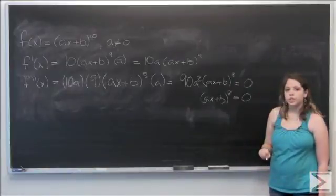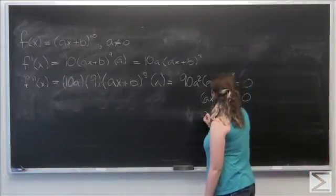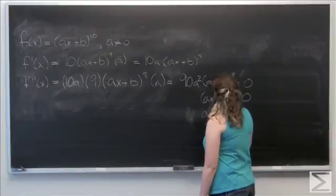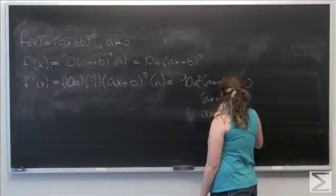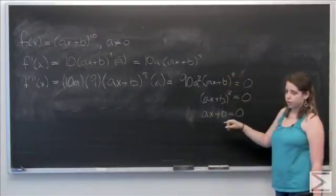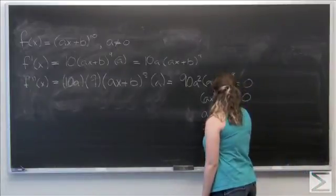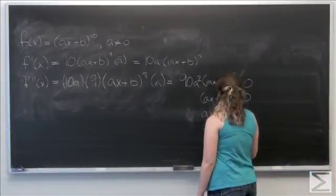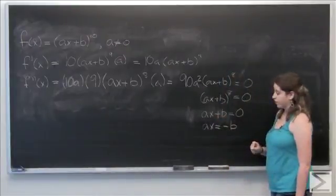So if we take the 8th root of both sides, we end up with ax plus b equals 0. Now let's subtract b from both sides. We have ax equals negative b, and then divide everything by a.